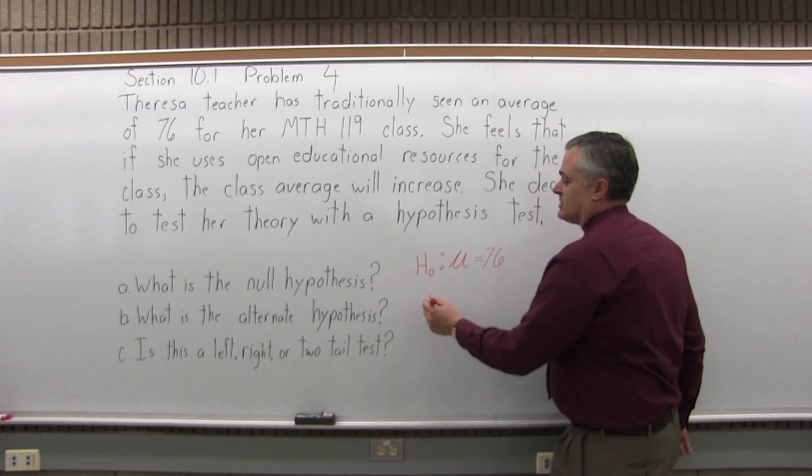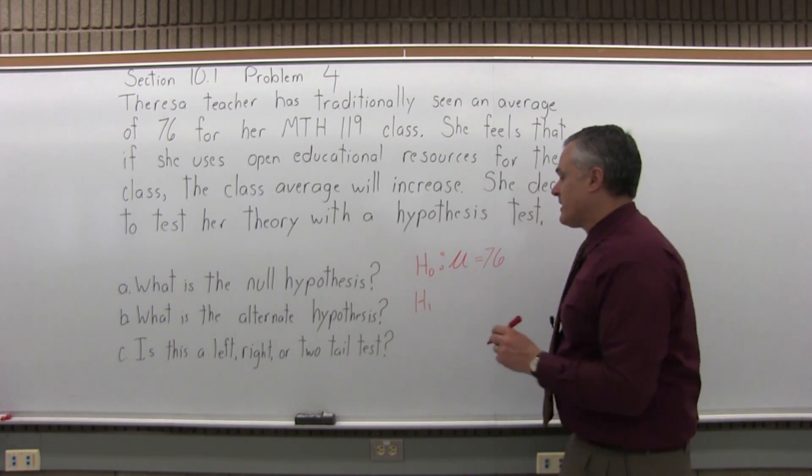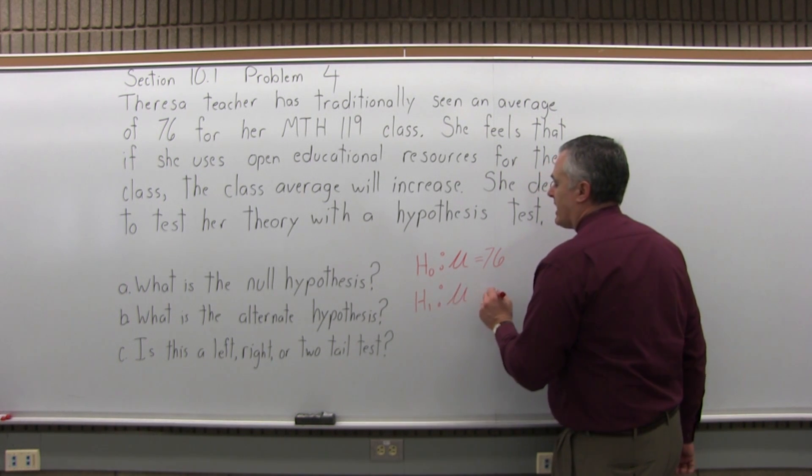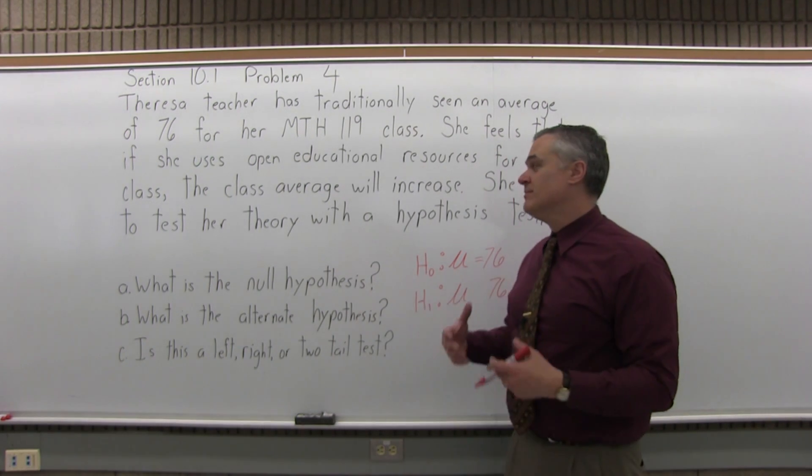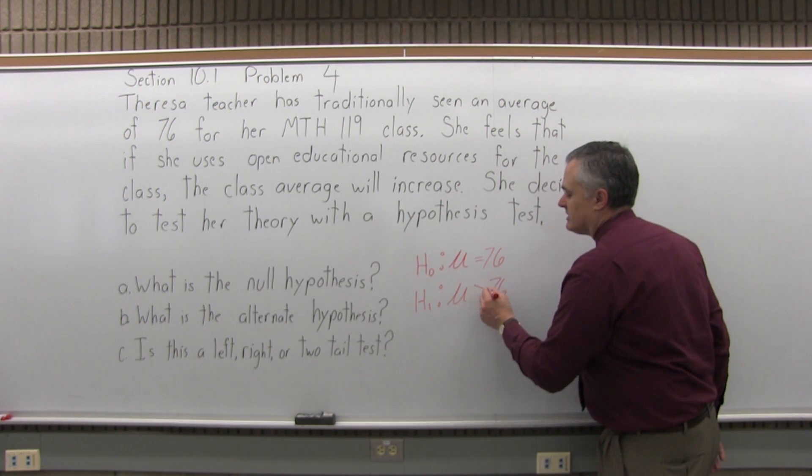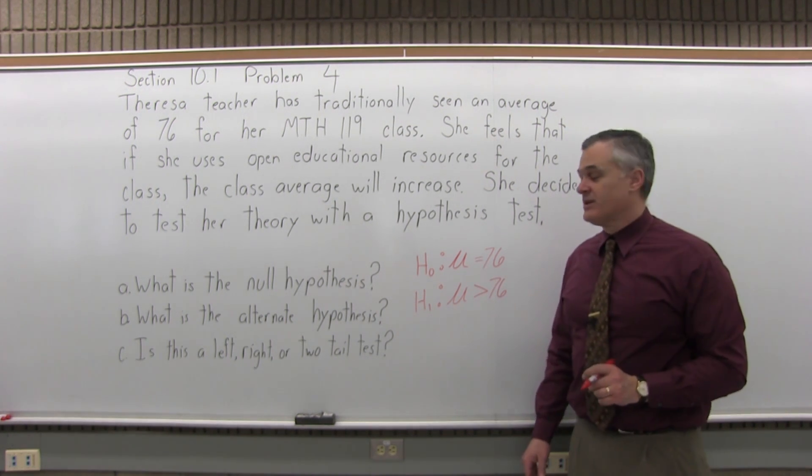What's the alternate hypothesis? The symbol is capital H with subscript of one, then you put a colon. We're going to have mu for population average, you'll still have 76. But we're testing to see if the average has increased, that it's better than 76 because of the new method of teaching. So you want to test to see if the average is greater than 76 for the alternate hypothesis.